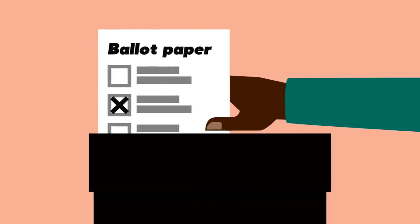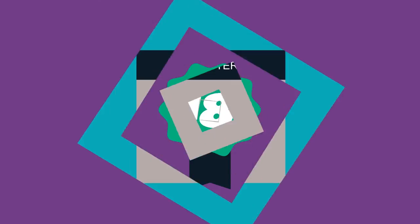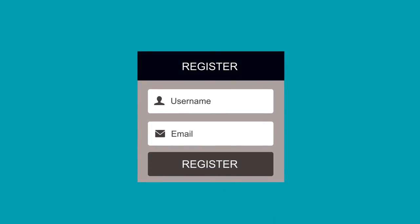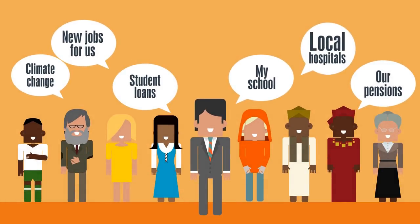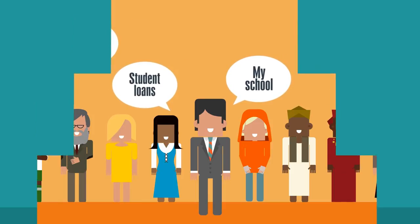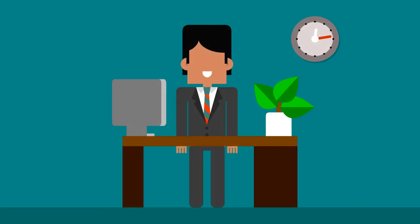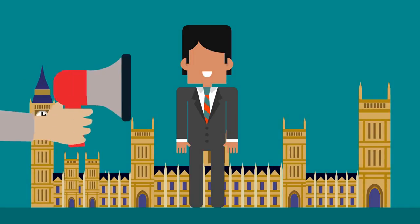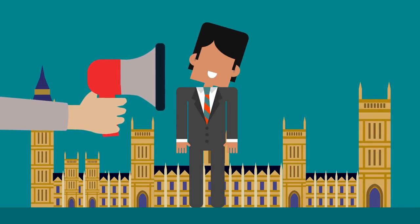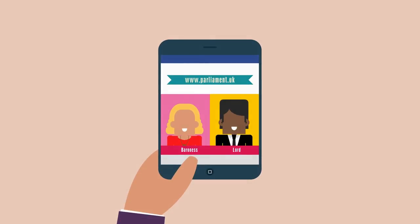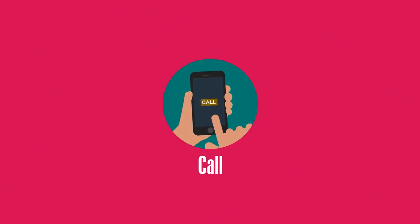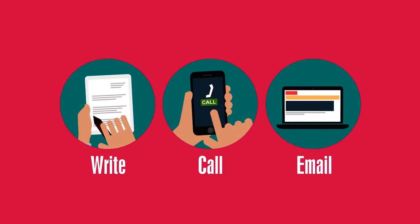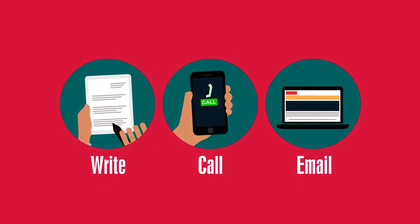One way to have a say in how the country is run is to use your vote. You have to be 18 or over to vote in general elections, but you can register from the age of 16. There are lots of other ways to get involved and have your voice heard, whatever your age. MPs represent all of their constituents. You can visit an MP in their local constituency office, or even travel to the Houses of Parliament to lobby them in Central Lobby. Lords have knowledge and experience in specific subject areas — you can look them up by policy interest on the Parliament website. Anyone can contact any Lord or their local MP by letter, phone, or email to discuss an issue that's important to them or their community.